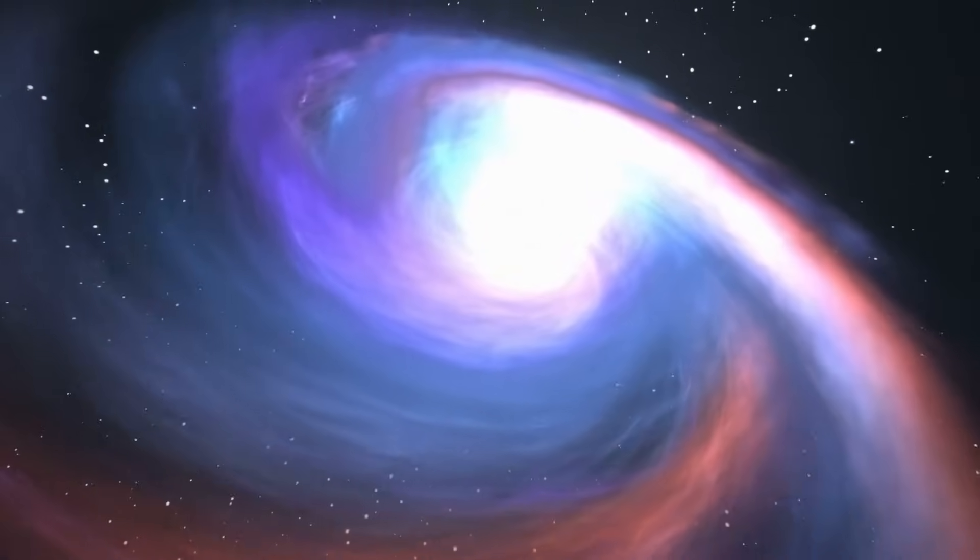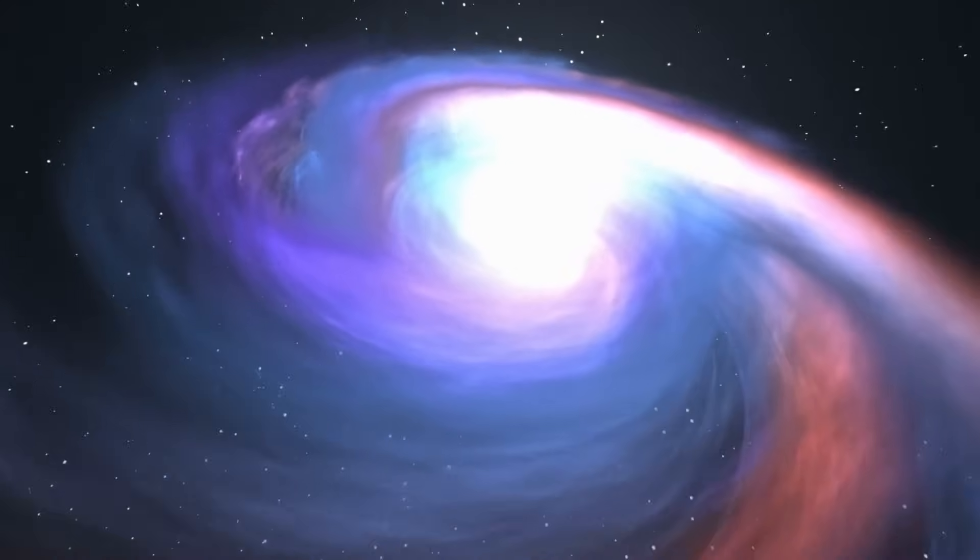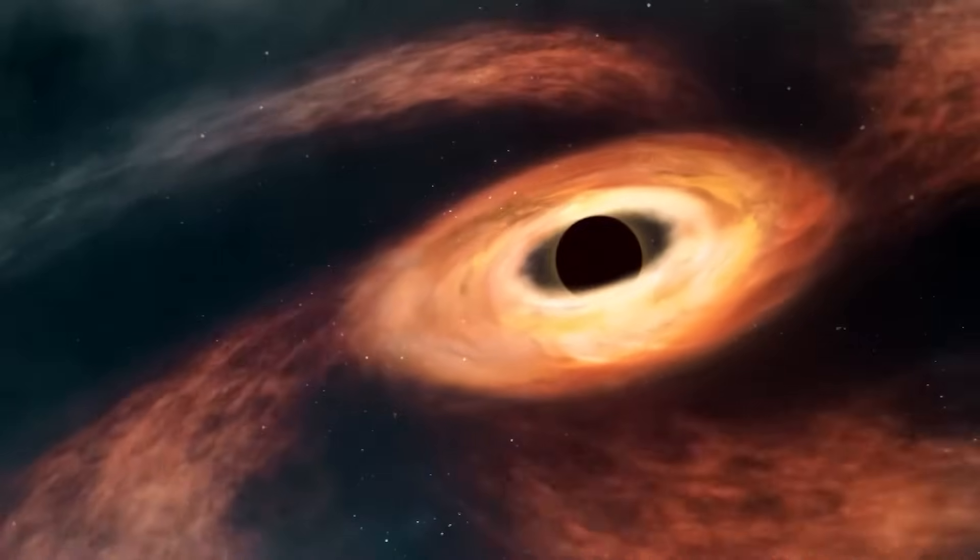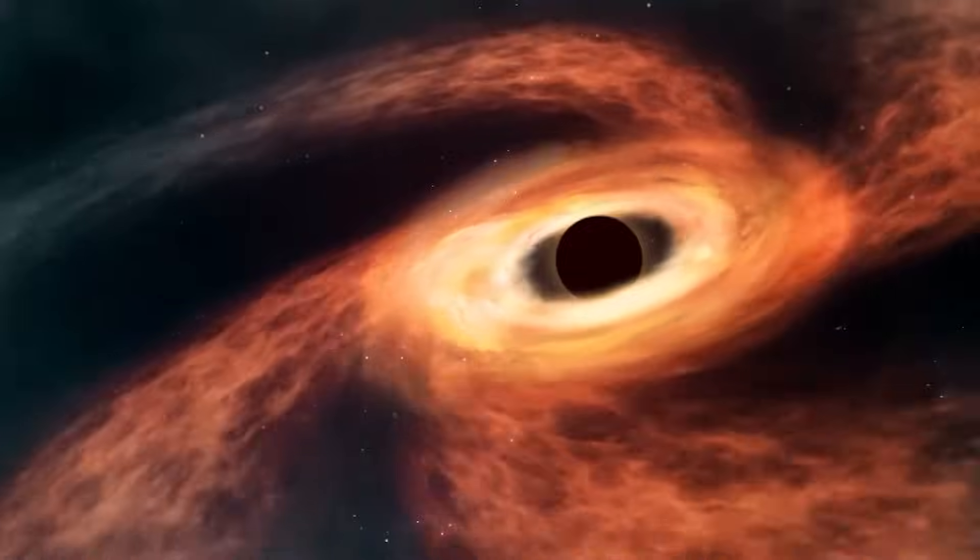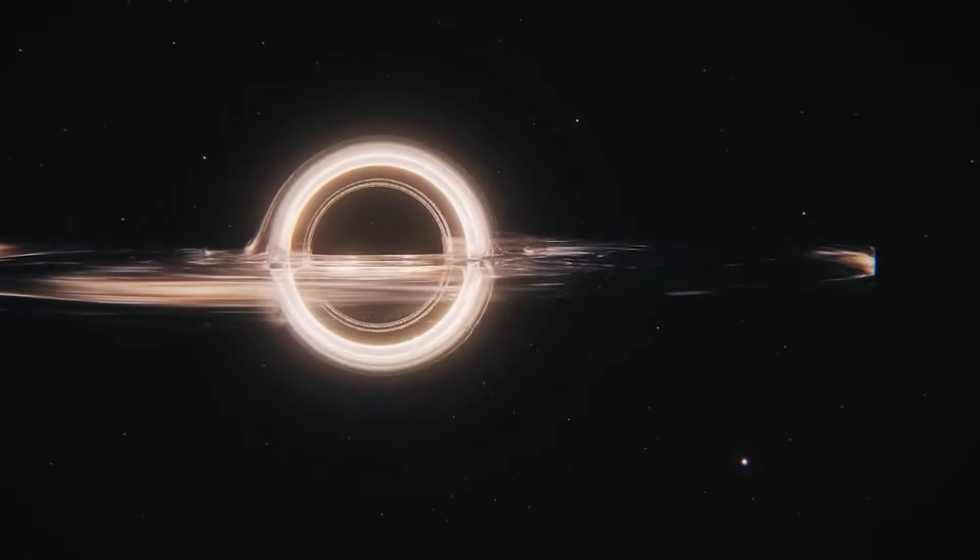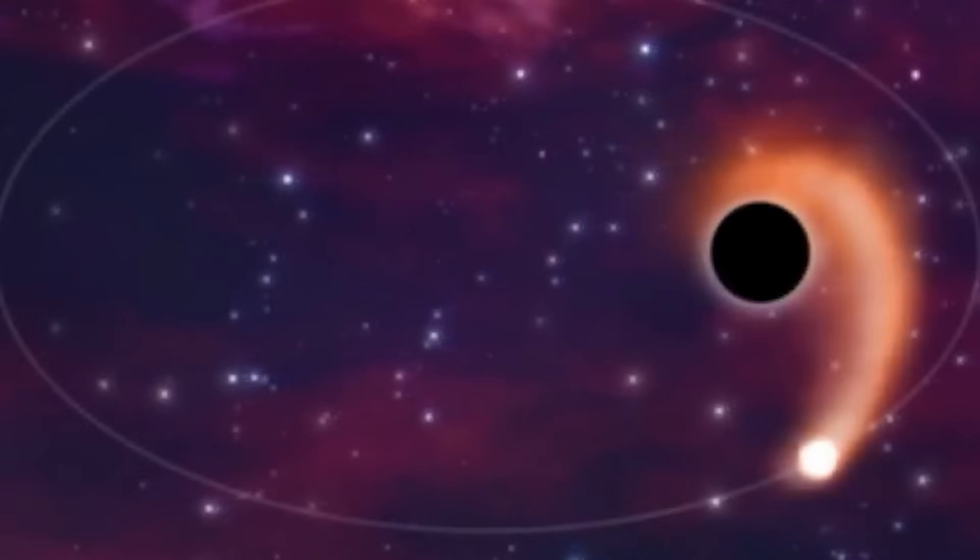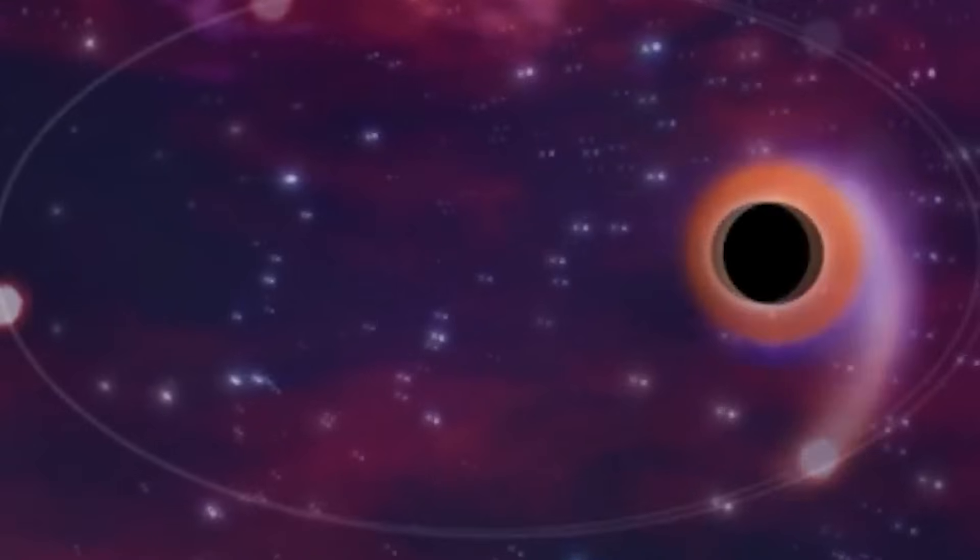In essence, the event horizon can be said to represent two worlds. Objects that are outside the event horizon tend to experience the black hole's gravitational effects, while any object that moves over to the other side of the event horizon is bound to be swallowed into the hole's central singularity.